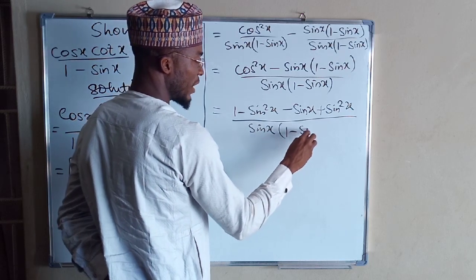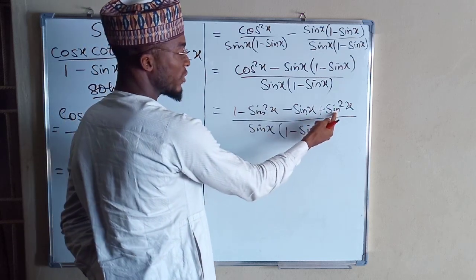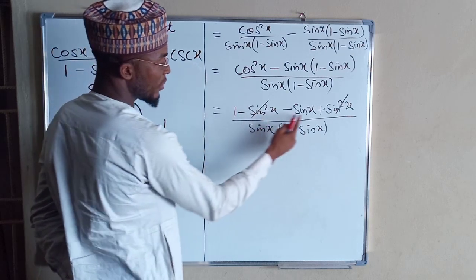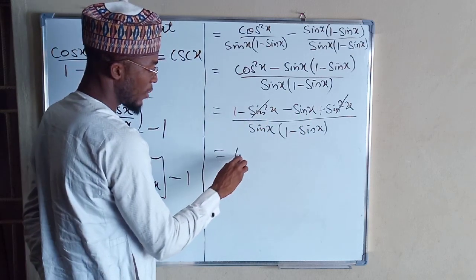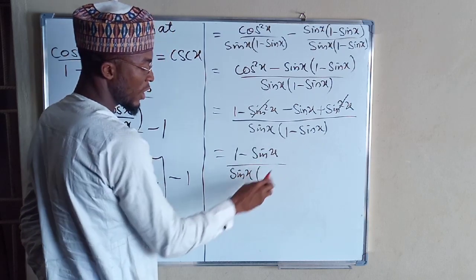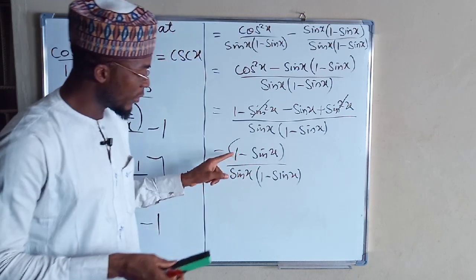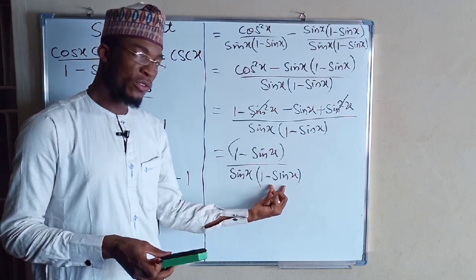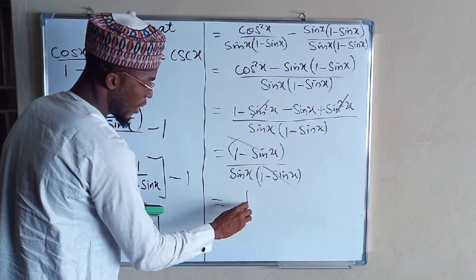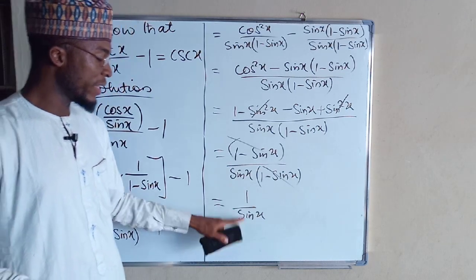In the numerator, minus sin²(x) and plus sin²(x) cancel each other, leaving just one minus sin(x). So the numerator is one minus sin(x) and the denominator is sin(x) times one minus sin(x). The factor one minus sin(x) cancels from numerator and denominator, leaving one divided by sin(x).